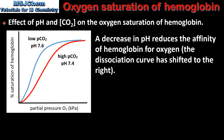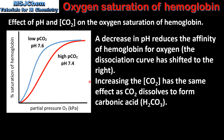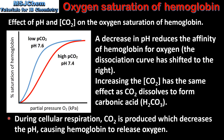Next we look at the effect of pH and the concentration of carbon dioxide on the oxygen saturation of haemoglobin. A decrease in pH reduces the affinity of haemoglobin for oxygen. Looking at the graph, we can see the dissociation curve has shifted to the right at the lower pH. Increasing the concentration of carbon dioxide has the same effect, as carbon dioxide dissolves to form carbonic acid. During cellular respiration, carbon dioxide is produced which decreases the pH, causing haemoglobin to release oxygen.